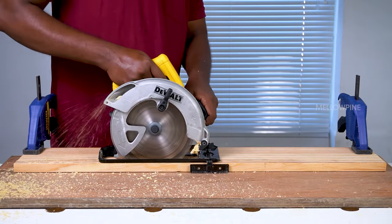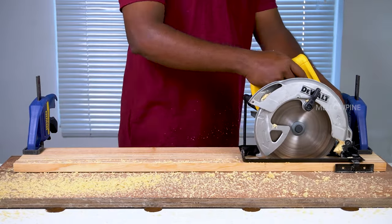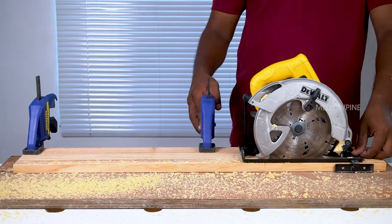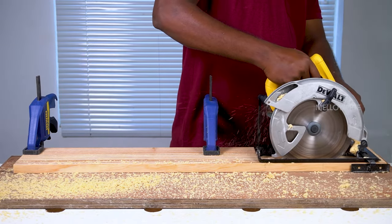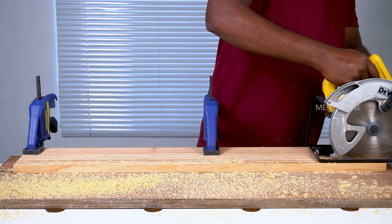When the saw reaches halfway length, the clamp might block your saw depending on the width of wood used. In that case, remove the clamp and fix it at the point where you started and continue ripping the wood.